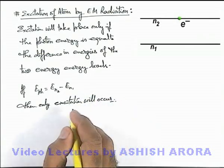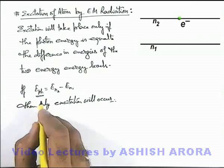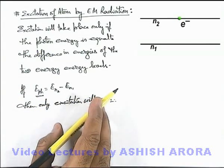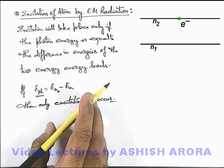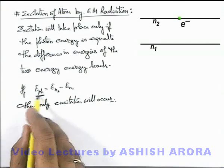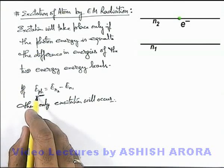The reason behind it is we know that photon energy is always quantized. If a photon is absorbed, either it will be completely used or it will not be used. So if this photon energy is not equal to the difference of energy levels, here we can see that this photon will not be absorbed.